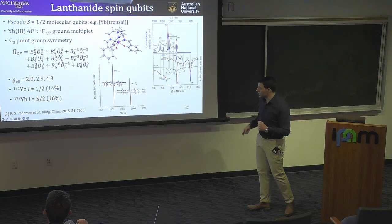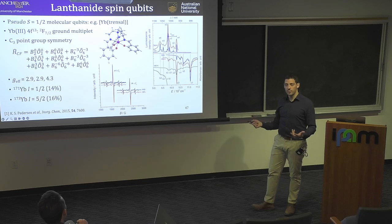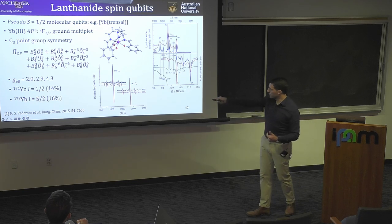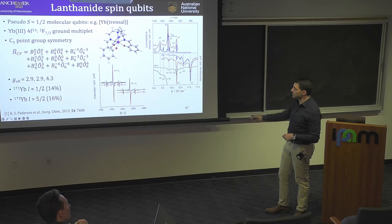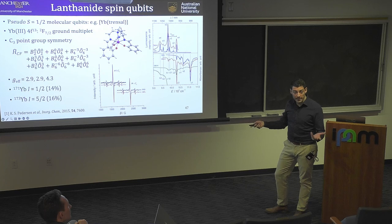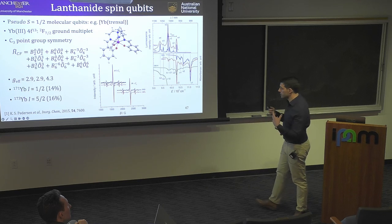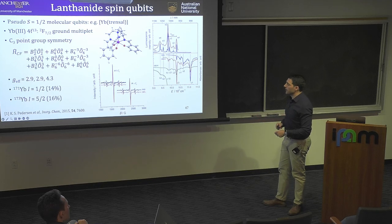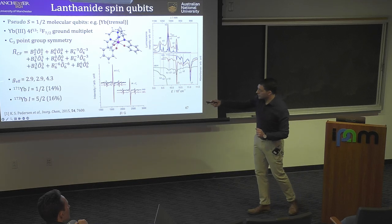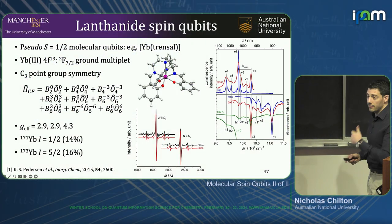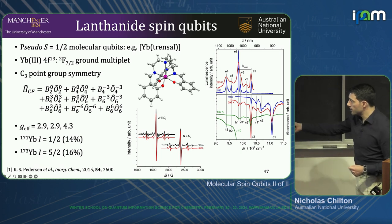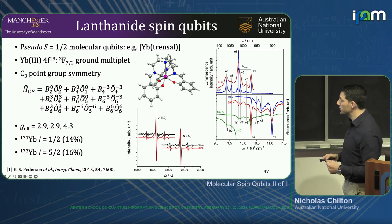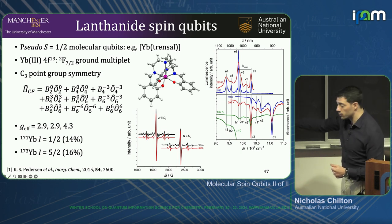In this case the G values are axially symmetric, because the molecule has axial symmetry. If you do the EPR spectrum on a single crystal with the magnetic field parallel to the C3 axis, you get a resonance line at one position; perpendicular to C3, you get a resonance line at a different magnetic field for a fixed frequency. Ytterbium in its natural abundance — 14% Yb-171, which is spin-1/2, and 16% Yb-173, which is spin-5/2 — produces all these wiggles on the sides of the central resonance line.